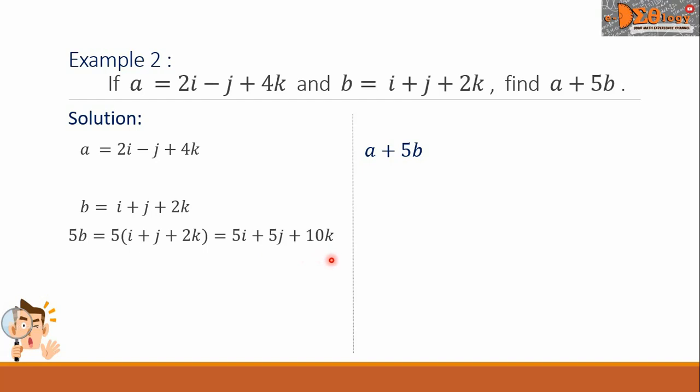Now, we are ready to substitute the corresponding values. The a is 2i minus j plus 4k plus the 5b, that is 5i plus 5j plus 10k. We can now combine similar terms. So, we have 2 plus 5 multiplied by i plus the negative 1 plus 5 multiplied by j plus the 4 plus the 10 multiplied by k.